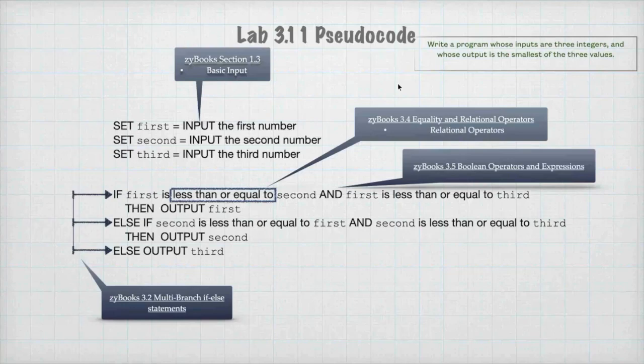So if first is less than or equal to second, and that evaluates to true, and first is less than or equal to third, and that evaluates to true, then first is the smallest number. If that evaluates to false, we then go to the elif statement, which is going to check second against first, and second against third.